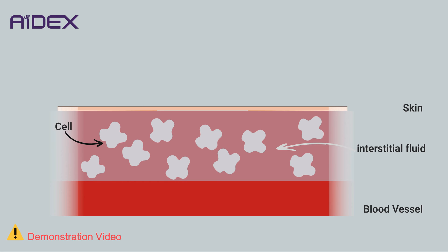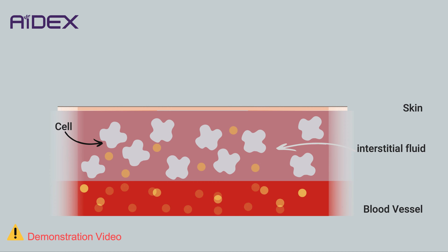One of the most crucial nutrients for cells, and their primary source of energy, is glucose. Therefore, glucose is constantly present in the interstitial fluid at levels parallel to those in the blood.